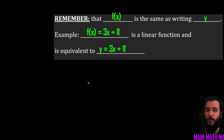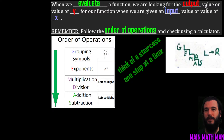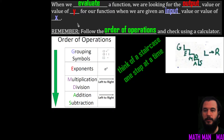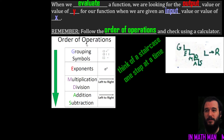So when you have a function, for example f of x equals 3x plus 11, you can say it is a linear function equivalent to y equals 3x plus 11 — you can rewrite it either way. When we evaluate a function, we are looking for the output value, or the value of y, when we are given an input value, or a value for x.